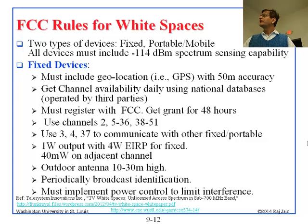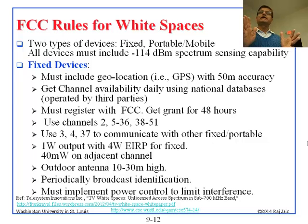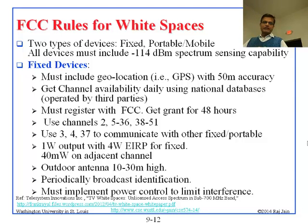Fixed devices must use geolocation — they should know exactly where they are within 50 meters accuracy, which is possible with GPS. With GPS they can state their longitude and latitude, and the system knows how much spectrum has been allocated to others and how much you can use. Fixed devices must use geolocation and get channel availability daily using national databases. The government has a database showing what is being used, and there are 10 companies in the United States authorized to host copies of these databases — they synchronize with each other and with the government, just like DNS.